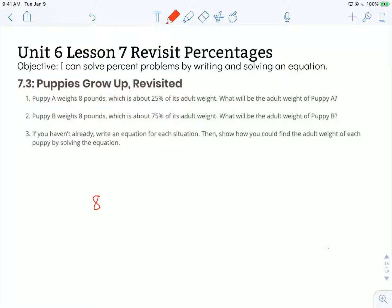Well, right now, Puppy A is 8 pounds, and that's 25% of its adult weight. So we know that when Puppy A is an adult, the weight is going to be greater than 8 pounds.